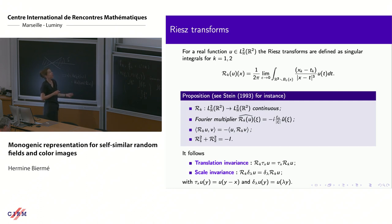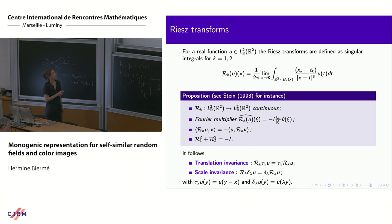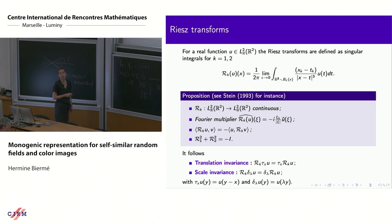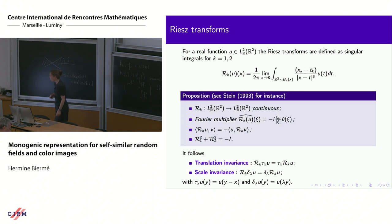The Riesz transform is a very nice operator. I work in dimension two for images. It is defined as a singular integral operator, but more usefully as a multiplier operator — the multiplier is an homogeneous function of degree zero, a kind of gradient divided by the norm, giving smoother properties. Key properties: it maps real functions to real functions; it is almost self-adjoint (with a sign); it satisfies conservation of energy (applying it twice gives minus the identity); and it is translation- and scale-invariant.